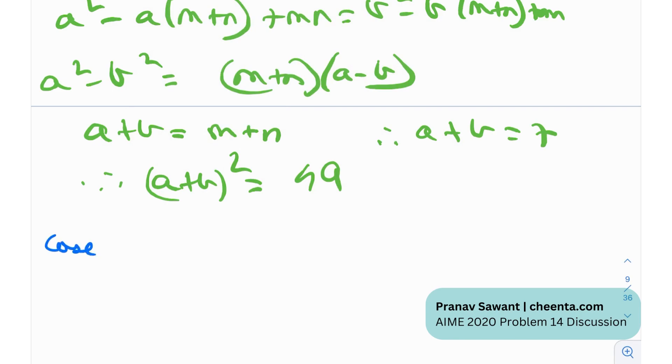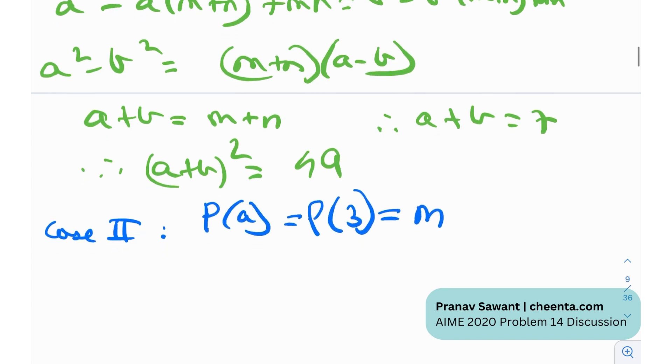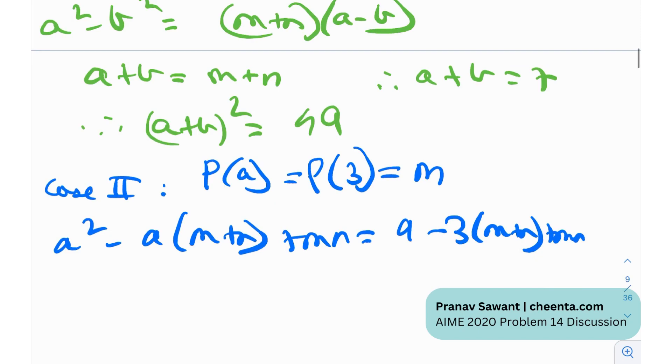Now let's examine the other case, case 2. What happens in case 2? In case 2, we had p of a equals p of 3, and that was equal to m. So that gives us a squared minus a times m plus n plus mn equals 9 minus 3 times m plus n plus mn, and this is equal to m of course. And if I just simplify this, I'll get a squared minus 9 equals m plus n times a minus 3. In other words, a plus 3 equals m plus n.